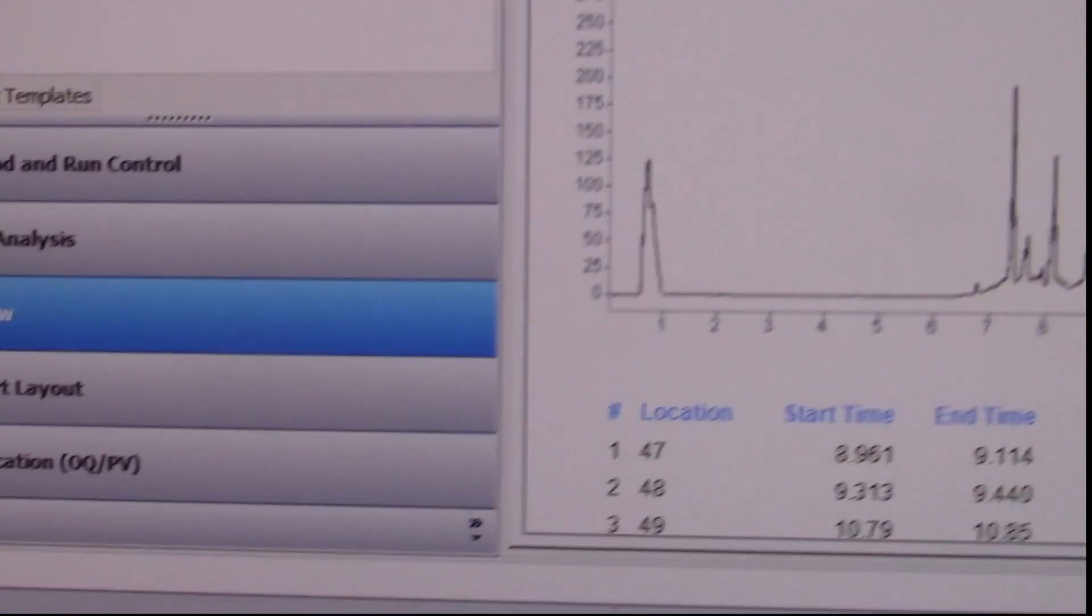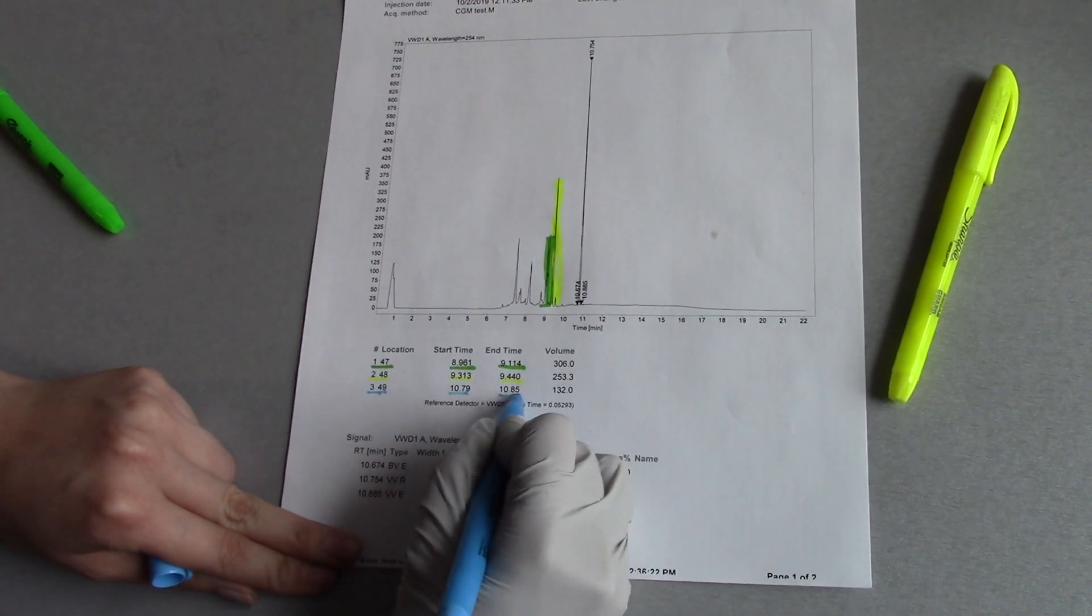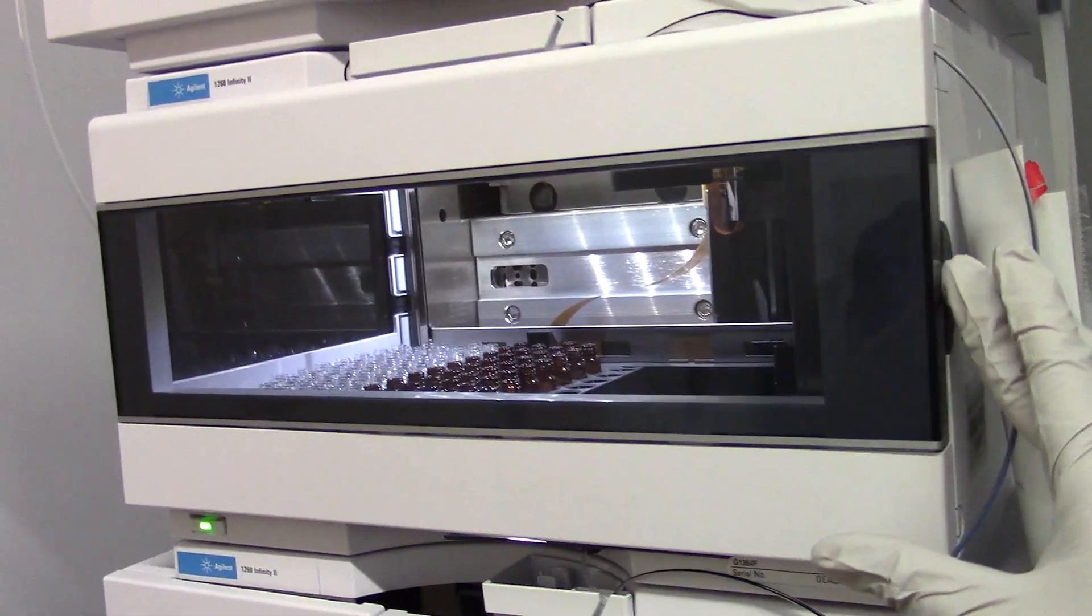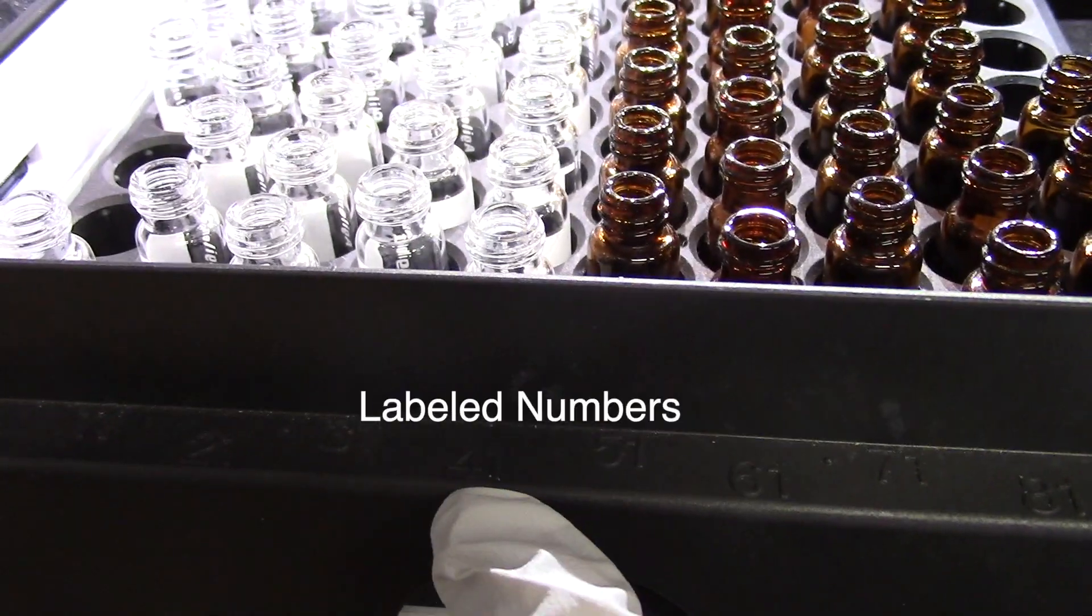Your graph will let you know exactly where you collected fractions and which vials it corresponds to. Each vial number will have a starting time and ending time and that's how you know which fraction is which. Now you have completed your HPLC run with your sample.